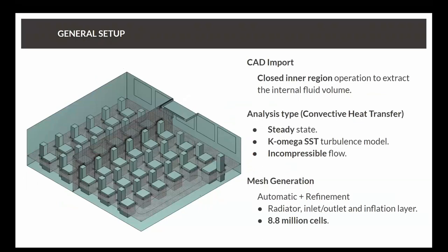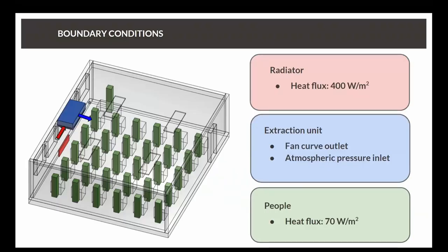Jumping to a general setup. First, once we import the model in the platform, I will show you later on in the live demo. But we need to do a closed inner region operation to get this model we can see here in the picture. It is mainly just extracting the inner volume where the fluid will be simulated inside the room as we are not interested in anything else. Once we have this, we choose the analysis type. In this case, the convective heat transfer with a steady state and standard turbulence model in compressible flow. Then the next step is to generate this mesh. I have to say that it's automatically generated like we have defined some inflation layer refinements, some refinements in the people, in the radiator. But it is really straightforward and automatic.